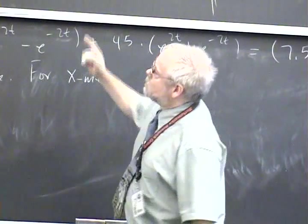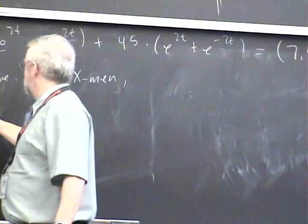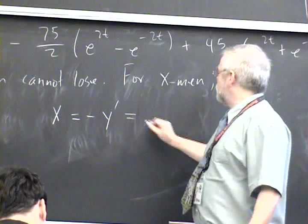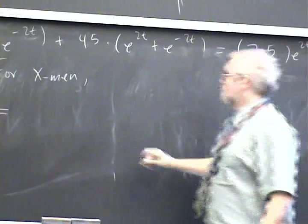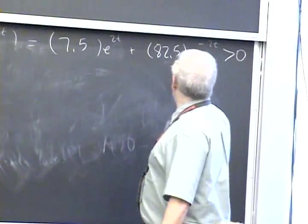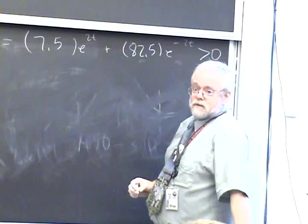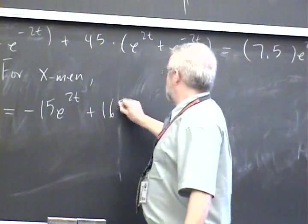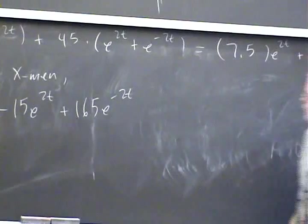Just because it never reaches zero means the Y-men cannot lose, right. And now for the X-men, we use the second equation over there: X' = -Y. So we differentiate and multiply by -1. So X(t) = -15e^(2t) + 165e^(-2t).